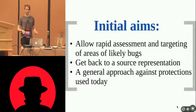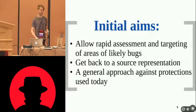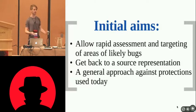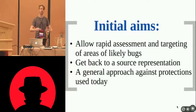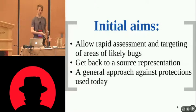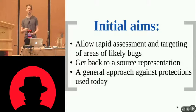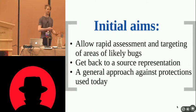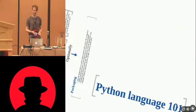So, why are we doing this? The initial aims: we really want rapid assessment and targeting of bugs within Python code. We want the toolkit to highlight the areas to look at and pull those out. We want source code back, not a disassembly — we want to see what the developer wrote and how they approached things. The motivation was that there were anti-reversing techniques in use. We want to get around them with a more general approach that doesn't require a specific block for each technique.